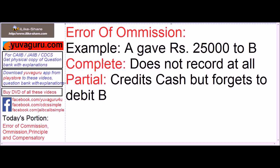For example, A gives 25,000 to B. In complete omission, he will totally not record any of the transactions — he gives and forgets. In partial omission, he credits cash but forgets to debit B. So credit the giver and debit the receiver — watch the other video for the golden rules.